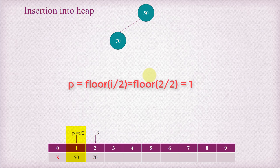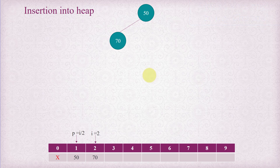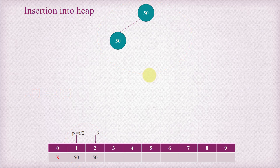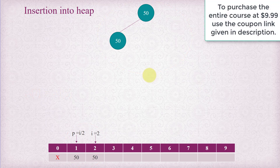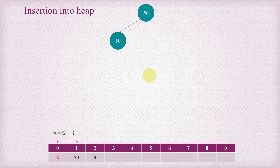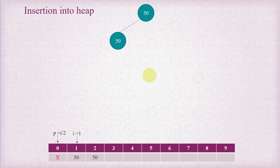The parent is at index 1 and contains 50. We compare: 50 is less than or equal to 70, so we move 50 to index i and make a provision for 70 at that position. Then we move i to p, and p is moved to the parent of i. Now i is 1, so p becomes 1 divided by 2, which is 0. Index 0 is invalid since our heap starts from index 1. So p is at an invalid index — we exit the loop and place 70 at index 1. The heap is restored.